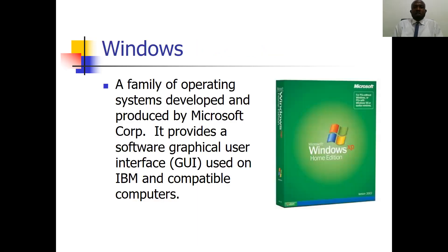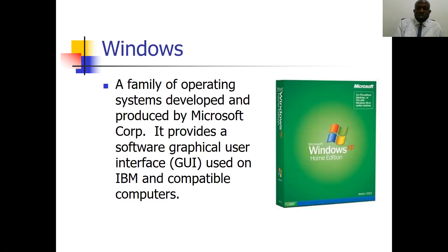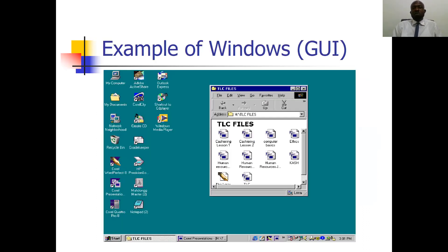There is also Windows — a family of operating systems developed and produced by Microsoft. It provides a software graphical user interface (GUI) used on IBM and other computers. You are able to see pictures and videos on your computer because you are using a Windows operating system. Know the difference between a Windows operating system and MS-DOS. This is just an example of a Windows operating system screen — this is the Windows Millennium Edition.